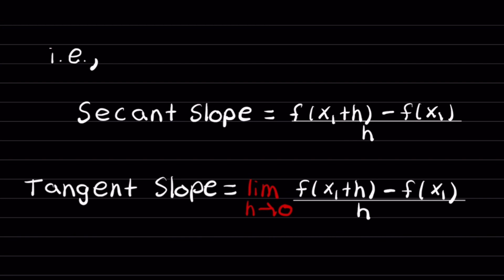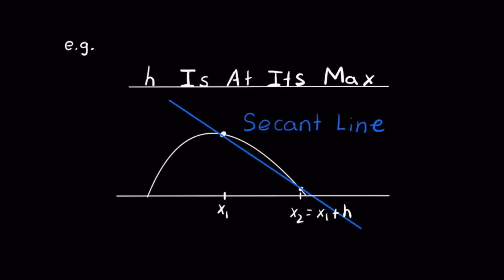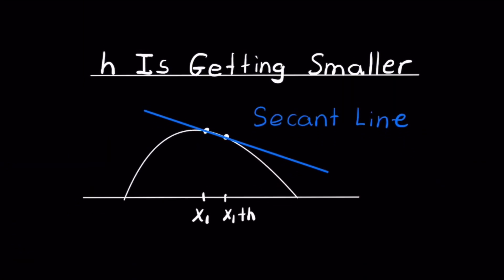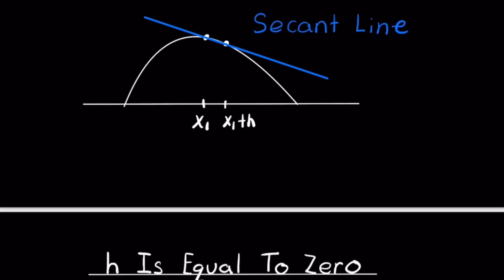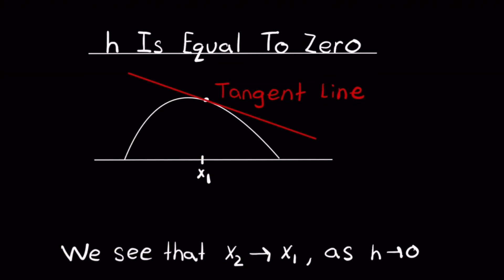The tangent slope is the limit of the secant slope as h goes to 0. For example, starting with the secant slope and replacing x2 with x1 plus h, h is at its max when x1 plus h equals x2. As h gets smaller, the point gets closer to x1, and as h becomes 0, the point that once started at x2 traveled closer and closer to x1, and now we are touching the graph at one point. So we see that x2 approaches x1 as h goes to 0.